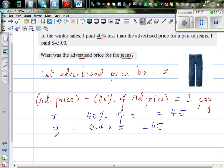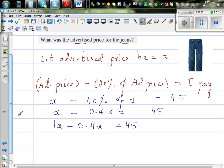So this is 1X minus 0.4X is equal to 45. This means this is 1 lot of X take away 0.4X which is 0.6X is equal to 45.